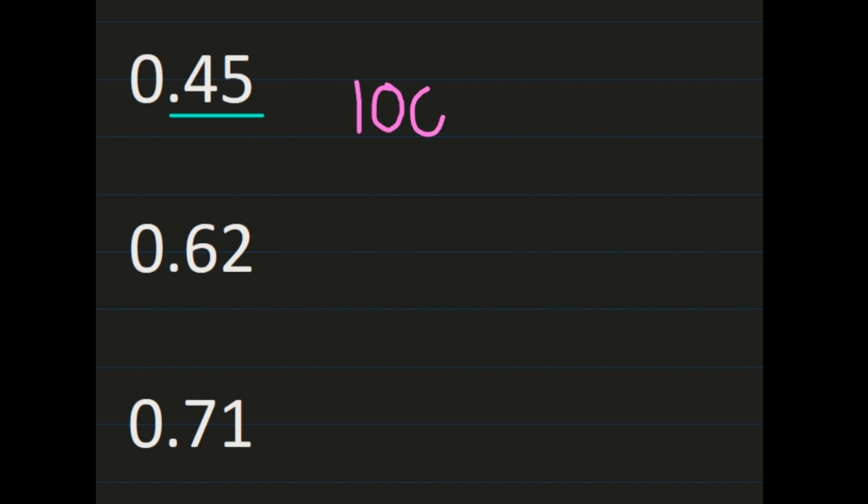The next example is 45 hundredths, which was not in the chart, so this is a decimal you would have to calculate. Looking at the final place, the 5 is in the hundredths place, which means the denominator needs to be 100. So 45 hundredths gives us 45 as the numerator and 100 as the denominator.